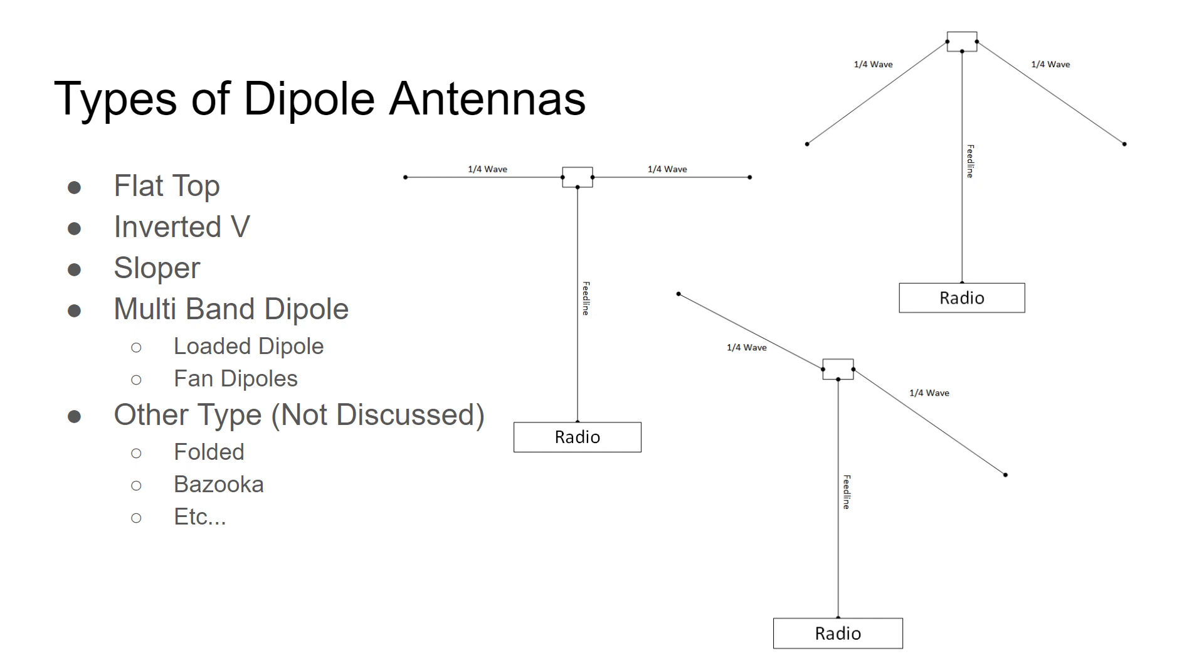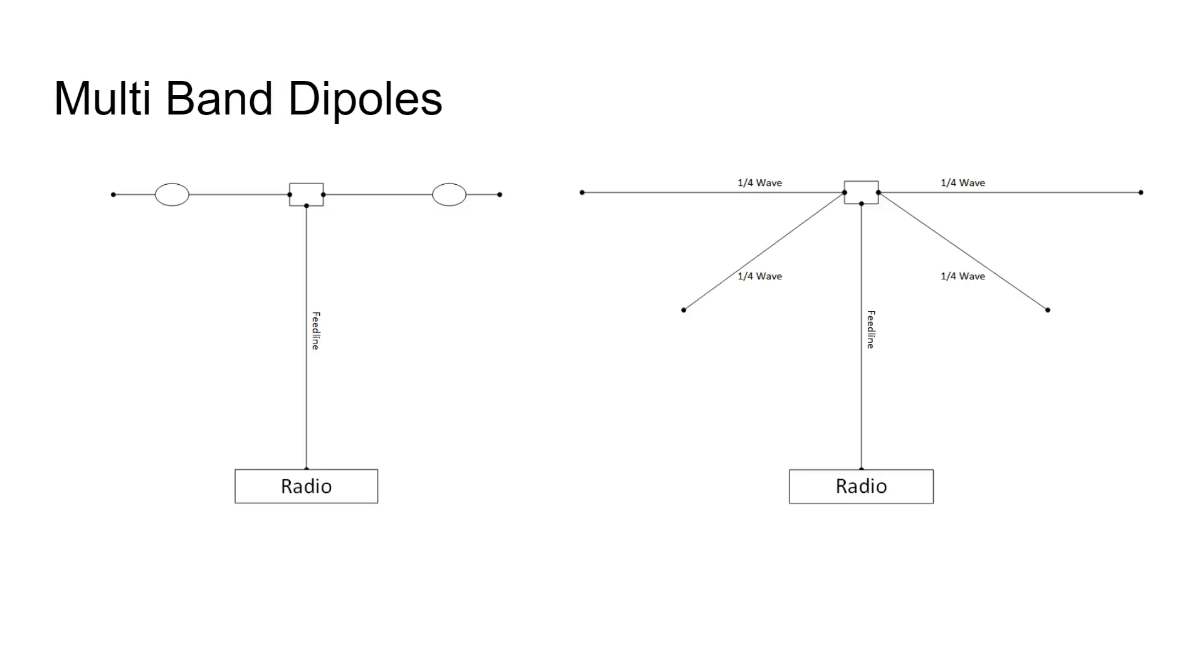There are some things such as multiband dipoles, like a loaded dipole or a fan dipole. We'll take a look at some diagrams of them. There are a lot of other types of dipoles, half-wavelength dipoles, that we're not going to discuss. There are many, many types of dipoles, and you are really only limited to your imagination or the imagination of other antenna designers.